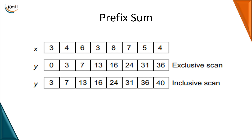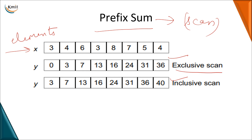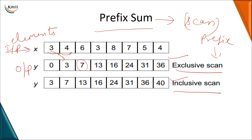The next problem we will see is prefix sum. You are given a list of input elements; prefix sum gives you a value at a particular cell depending upon the previous values. Prefix sum is of two types: exclusive prefix sum and inclusive prefix sum, also known as exclusive scan and inclusive scan. In exclusive scan, the first value is zero, and you start storing from the second cell — the second cell gets the first input value.